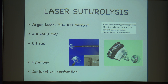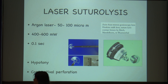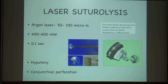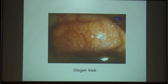Then you have laser suture lysis: use argon laser, 50–100 micrometer spot size, 400–600 milliwatts, and 0.1 second duration. The problem with laser suture lysis is you can have hypotony and conjunctival perforation, so remove one suture at a time — never remove all the sutures together. Once you have used ologen, doing laser suture lysis is difficult because you won't be seeing the sutures, so either put a releasable suture or use absorbable sutures instead of nylon.